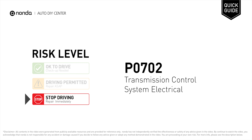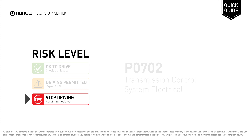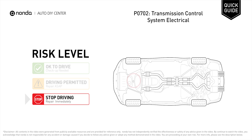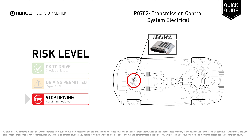P0702 is a diagnostic trouble code for transmission control system electrical. Under this circumstance, stop driving and repair your vehicle immediately. P0702 indicates that the transmission control module detects a malfunction with the transmission controls.